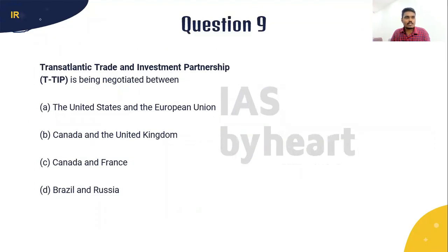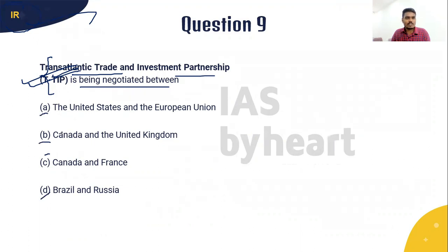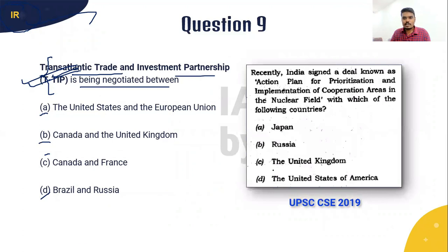Question 9 is from international relations and organizations: The Transatlantic Trade and Investment Partnership (TTIP) is being negotiated between which parties? This partnership has gained impetus in recent times due to the regime change in the United States. There are four options and we should find the correct one. I will give you 10 seconds to answer. This question has been inspired from the 2019 question paper about India's nuclear agreement.